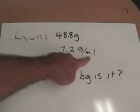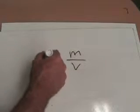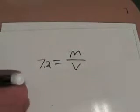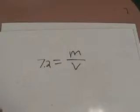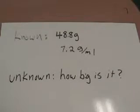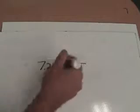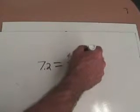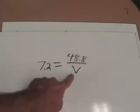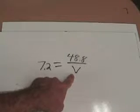So grams per milliliters, that's my density, 7.2, and then the mass is 48.8 grams. Now in this case, I can't solve directly for V. So what I have to do is get V out from another denominator before I start.